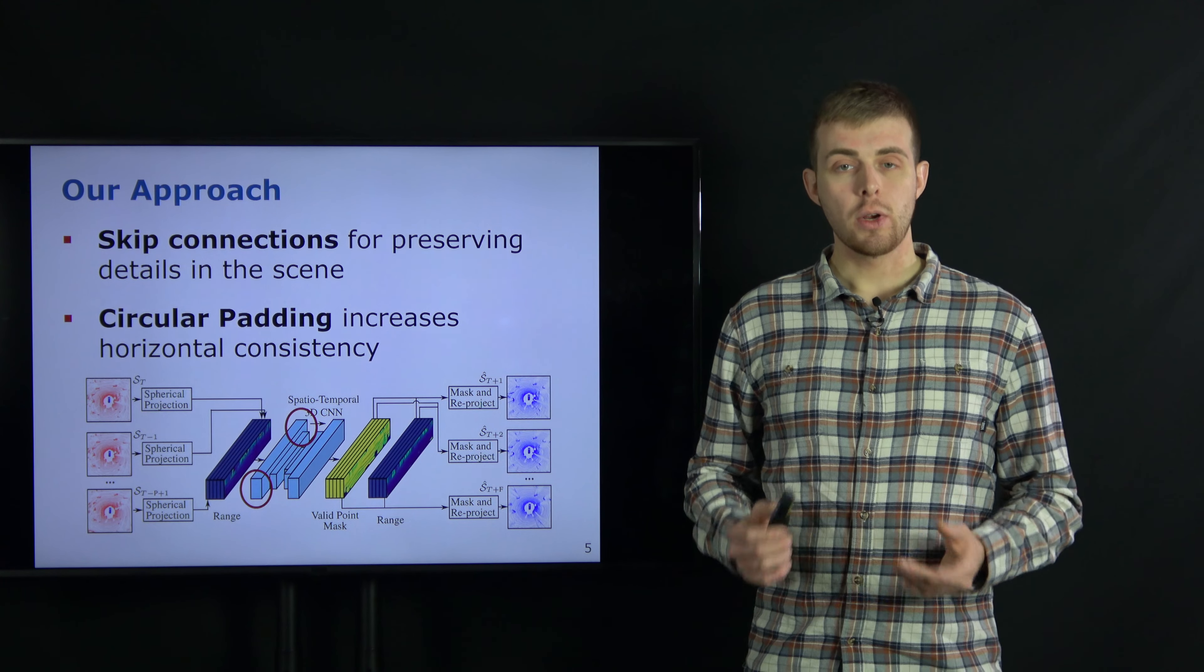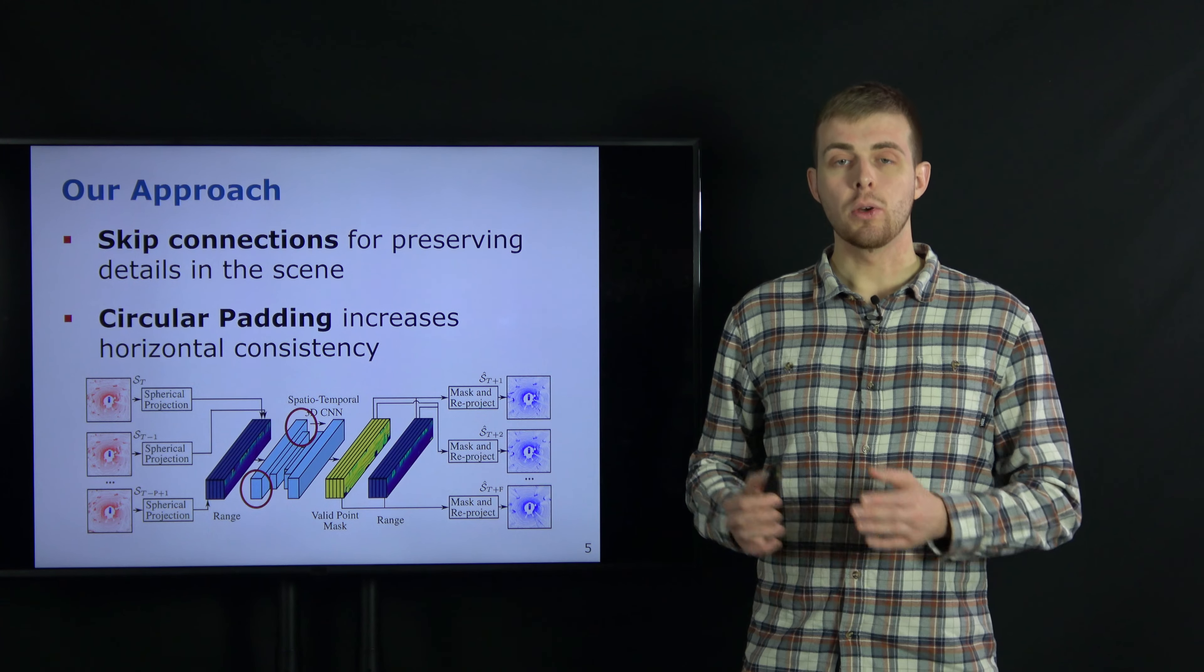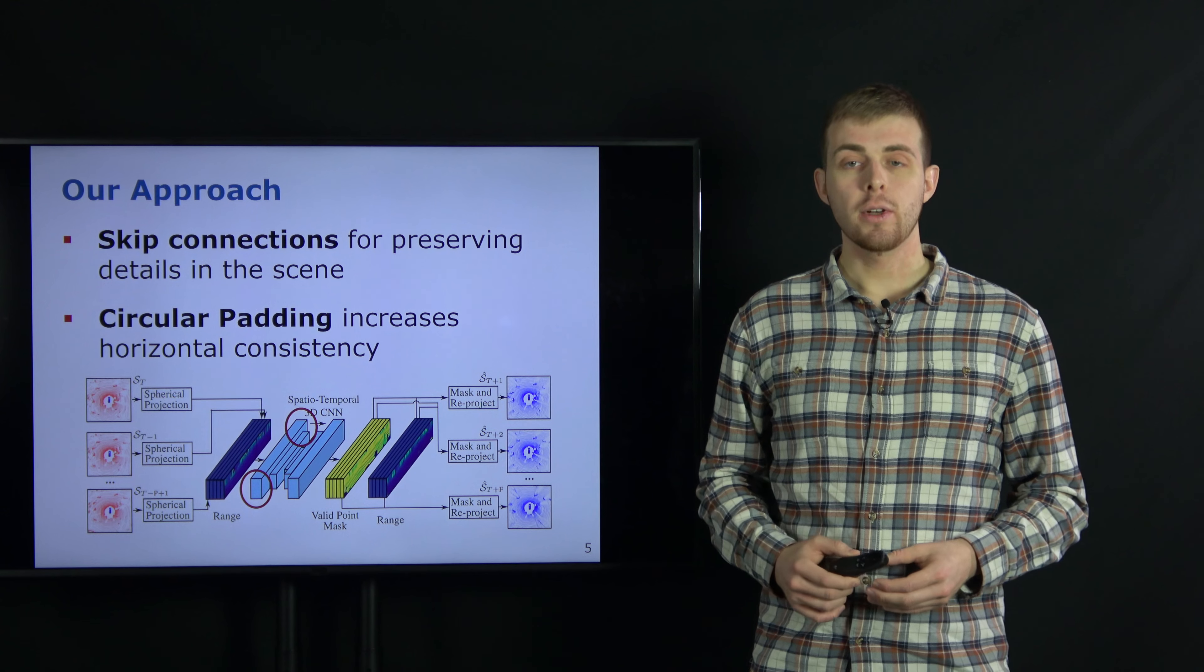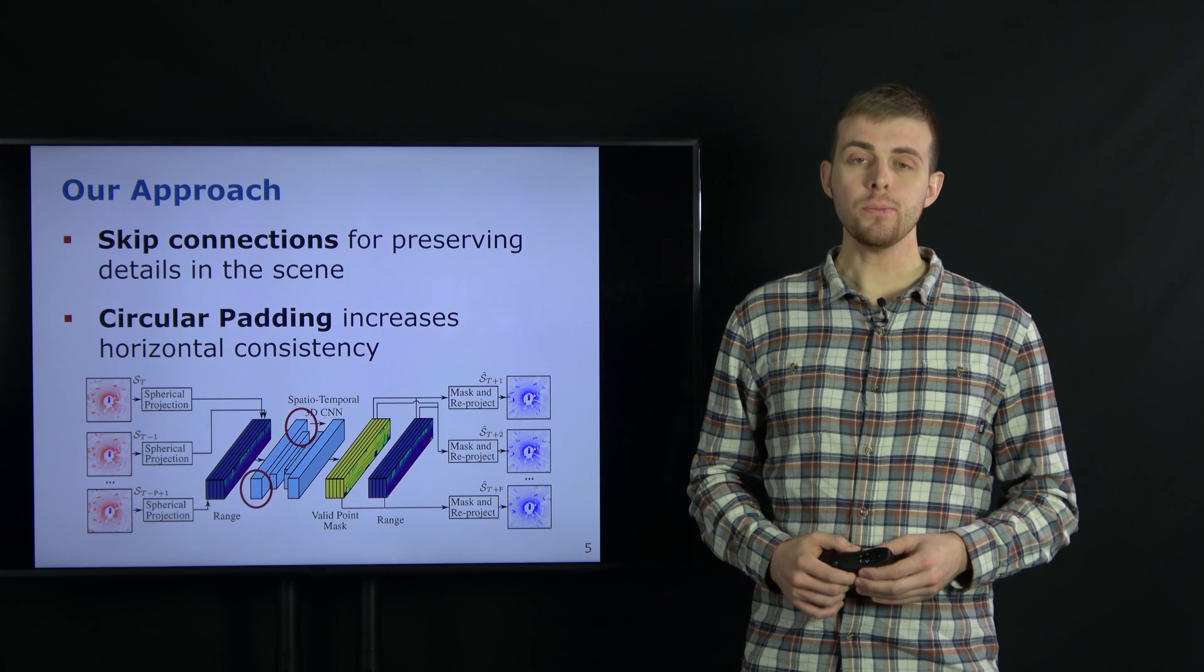We also propose the use of circular padding across the left and right image boundaries due to the circular structure of the range image. Our experiments show that this leads to more consistent predictions for objects at the range image boundary.